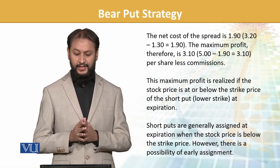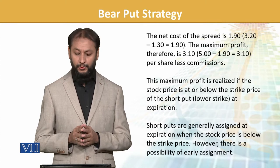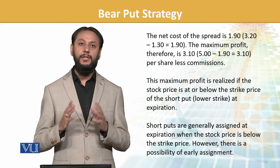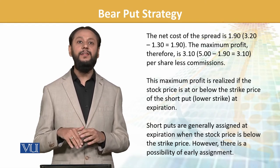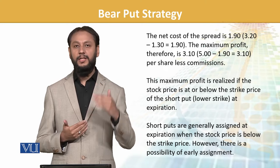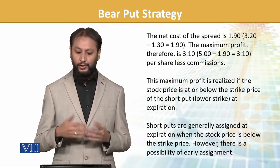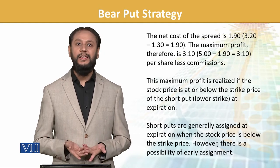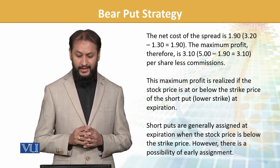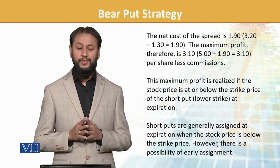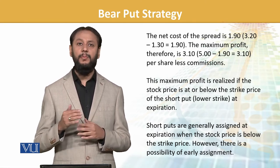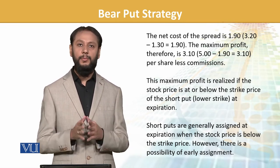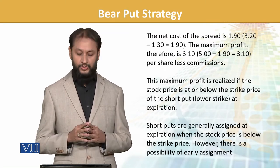This maximum profit is realized if the stock price is below the strike price of the short put at expiration — یعنی جب share की price actually नीचे जाएगी, जैसे हमने सोचा था, तो हमें per share 3.1 dollars का gain हो जाएगा। Short puts are generally assigned at expiration when stock is below the strike price; however, there is a possibility of early assignment भی होتی ہے۔